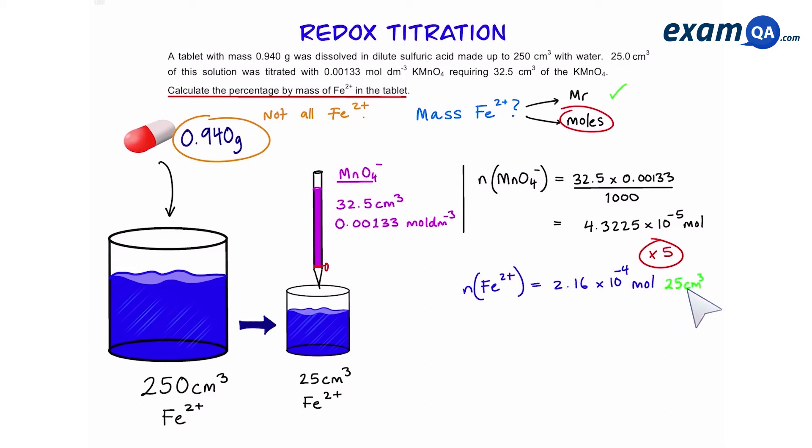Now remember, this is only in the 25 cm³ sample. So, the original will have 10 times more moles than the 25. That gives us 2.16 times 10 to the power of minus 3 moles.